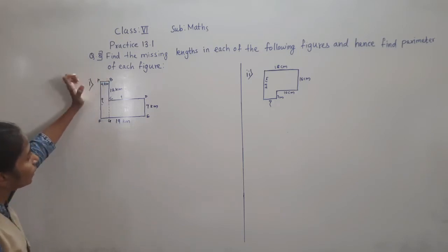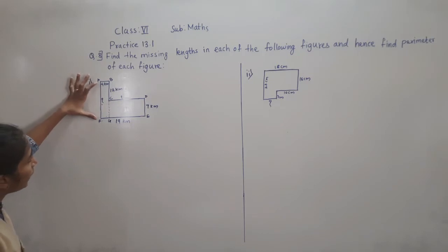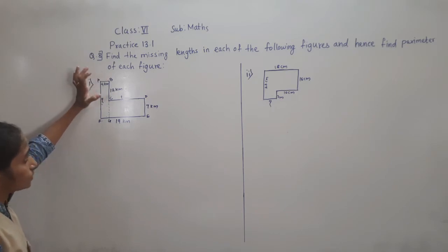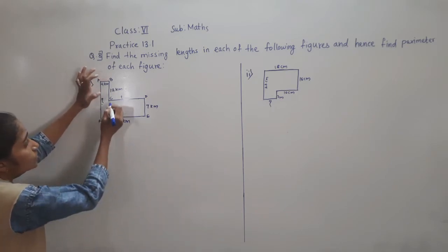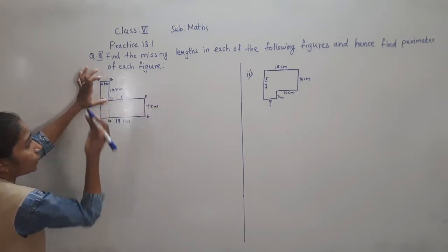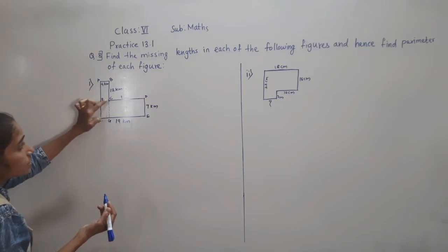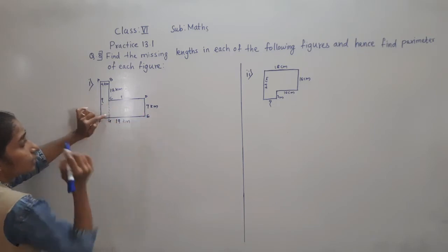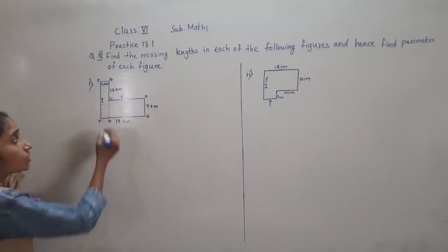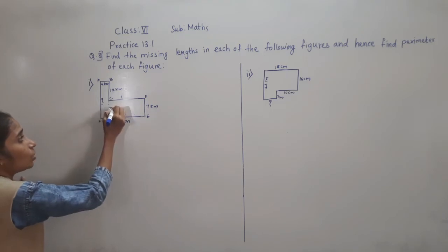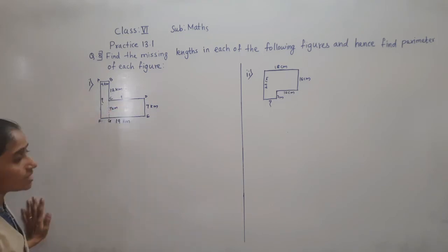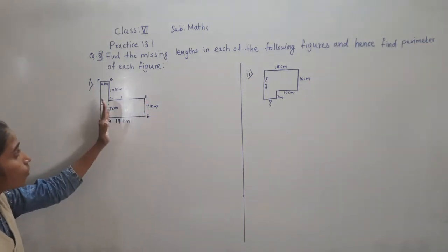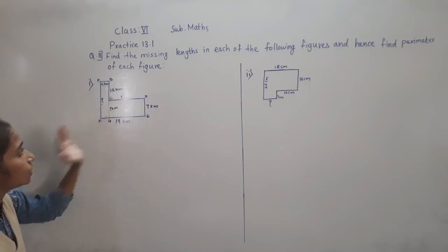Now here we got point G. We know the length BC — BC is given 12 km. Now CG is opposite to DE. This is a rectangle, so opposite sides are equal. DE is 7 km, so CG is also 7 km.